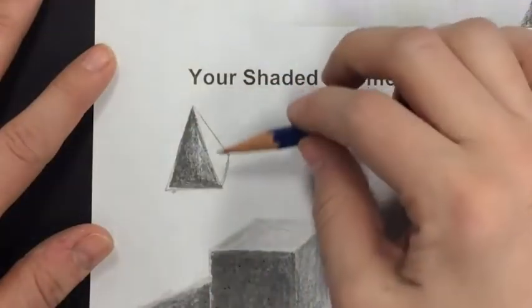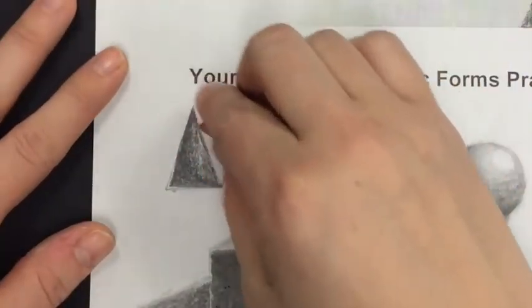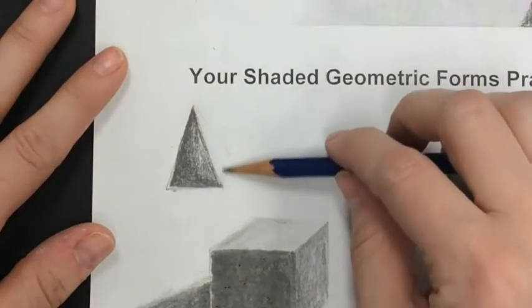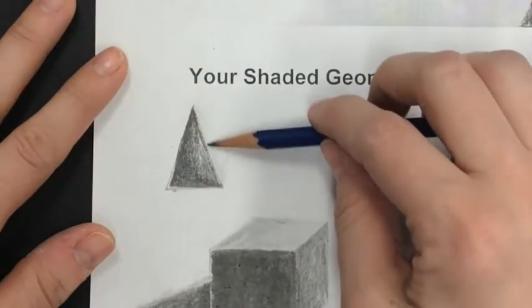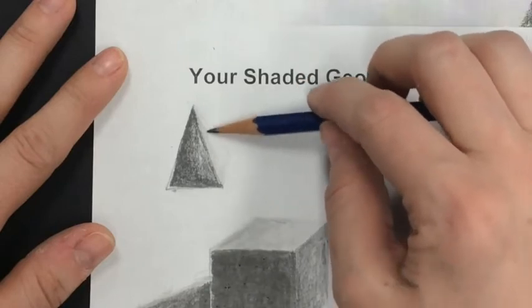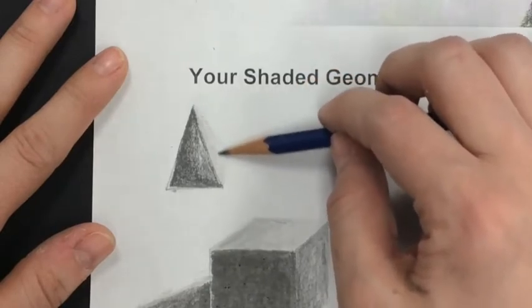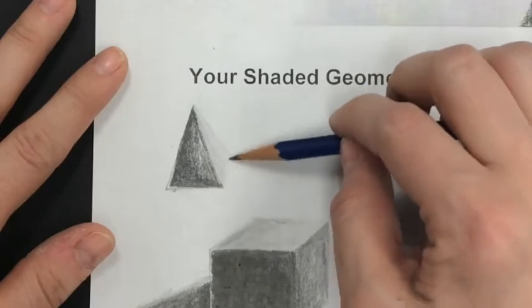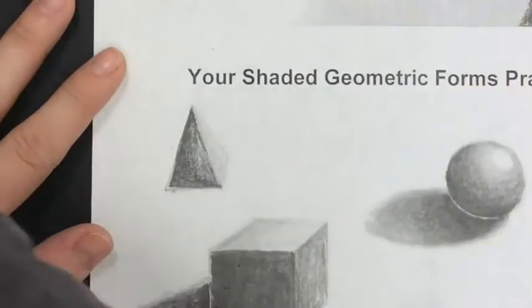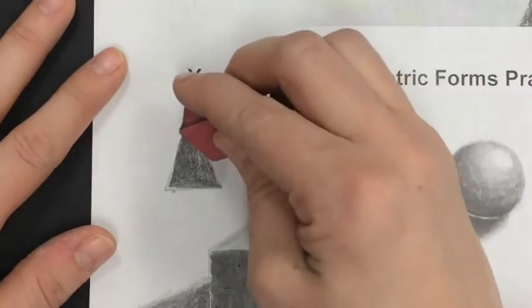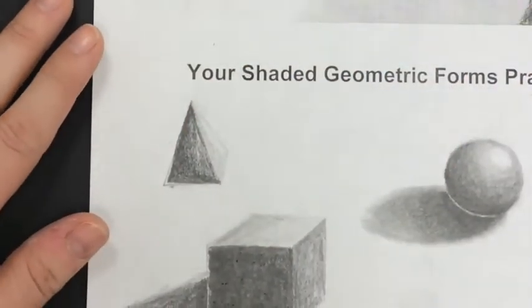Then for my light side, again I'm going to take my eraser, erase so my lines are light. I'm going to use my 2H to define that side of my object. Now if you're seeing a highlight, remember you can leave it white, or you can come in with your eraser and leave a little bit of white showing there.